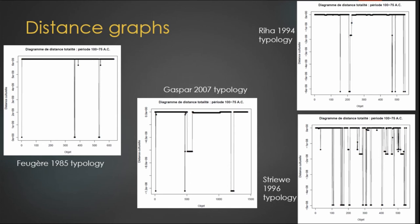First of all, two of them were established in relation to the fibulas found at a particular site in the study area. Secondly, they do not have the same degree of typological precision. The best example is shown with the Striewe typology, which is in the bottom, which defines a large amount of subtypes for a single type, which is the normal fibula.